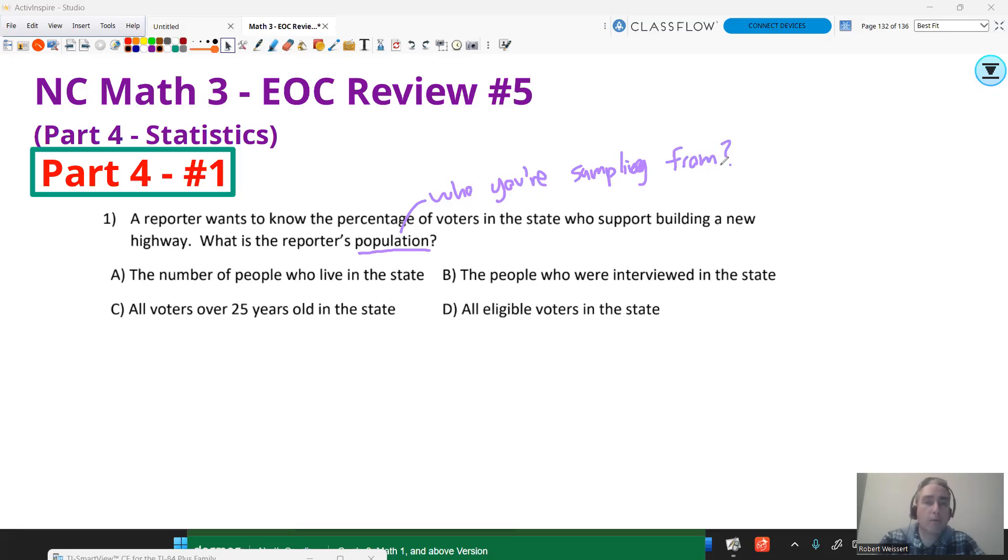Well, we're talking about voters. So the number of people that live in the state is not your population because there are kids that can't vote. So no bueno. The people who are interviewed in the state? That's your sample, not your population. All voters over 25 years old in the state. Why does age have anything to do with it? It says voters, percentage of voters. Voters in most states are 18. So that's no good. So the answer is all eligible voters in the state. That's your population.